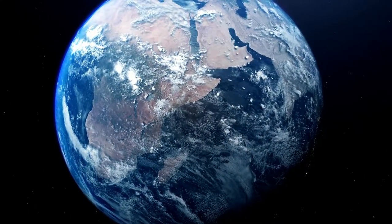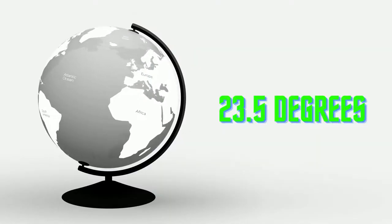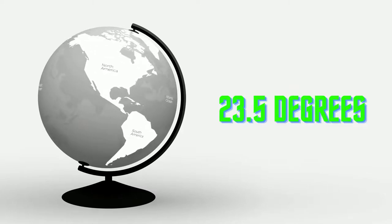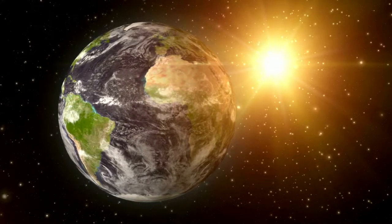The tilt of the Earth's axis to its orbital plane causes the seasons to occur. The Earth's axis deviates by around 23.5 degrees. As a result, throughout the summer and winter seasons, one part of the Earth is more directly exposed to the sun's rays than the other.